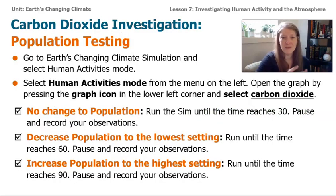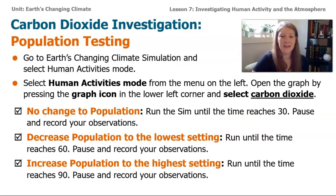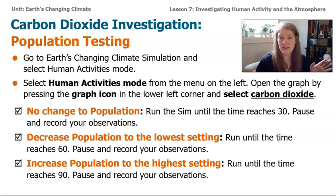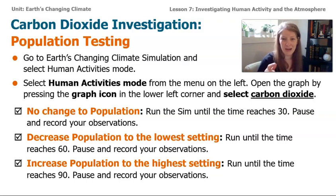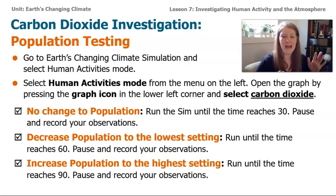After you go to the Earth's Changing Climate Sim and select Human Activities Mode, click on the graph icon at the very bottom. Make sure you select carbon dioxide. The first thing you do is just let the sim run until it reaches 30 on the timer, then pause and record your observations — this is where there's no change at all to the population. Then change the population down to the very lowest setting, hit play, and run it for 30 more seconds. Pause and record what you notice on the graph — what happens to the temperature, ice, and carbon dioxide specifically.